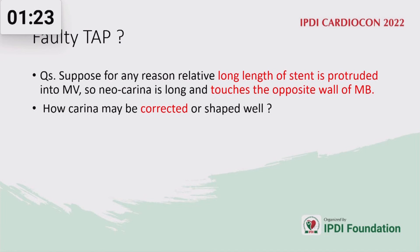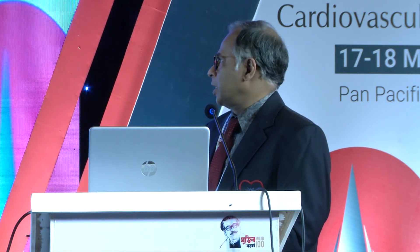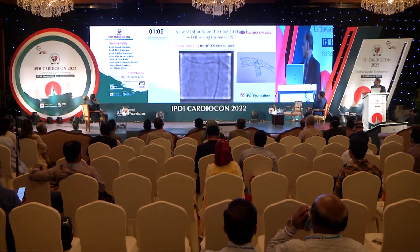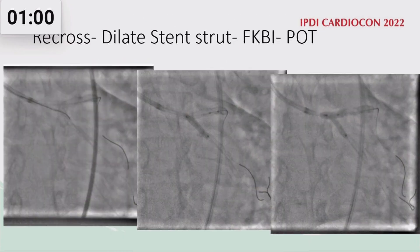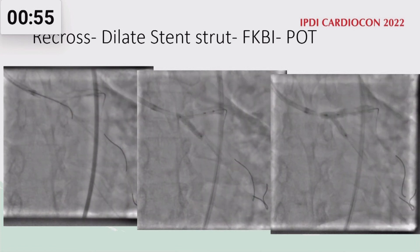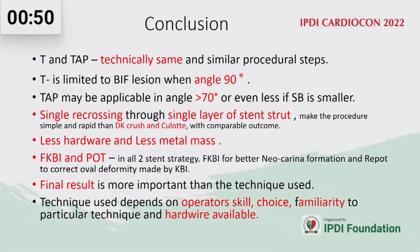What is faulty TAP? Sometimes the protrusion of the side branch stent is too long, creating a large carina. In that circumstance, the carina may touch the opposite wall, and that should be corrected. It can be corrected by just crushing or reverse crush technique — the main branch balloon is pulled back and crushed. Then recross the side branch, perform post dilatation, final kissing balloon, final POT, and the result will be excellent.